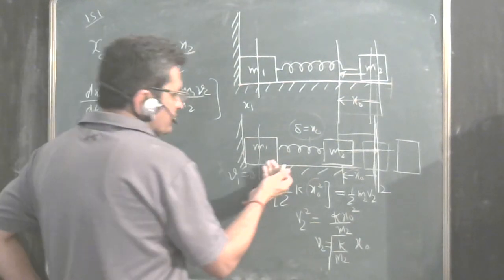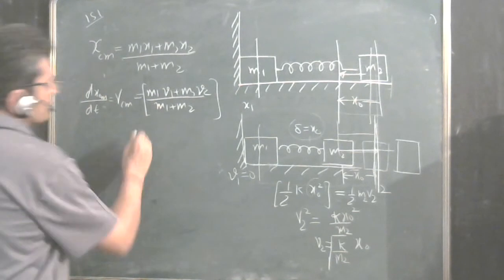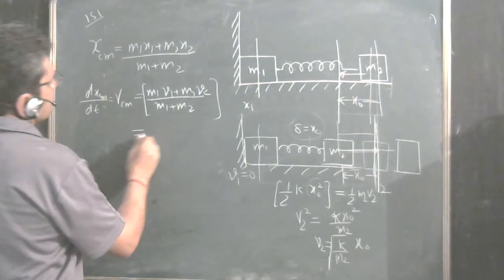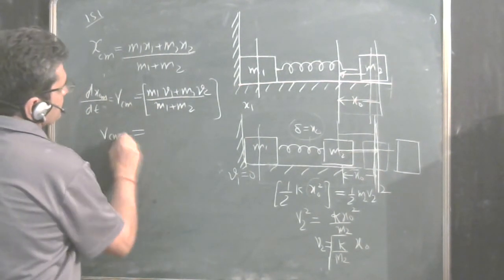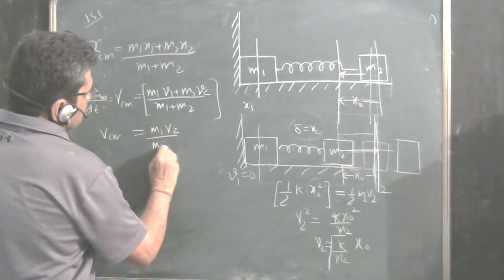So when it is breaking off, just the moment it breaks off, its velocity was 0. So V1 is 0. So V center of mass is M2 v2 upon M1 plus M2.